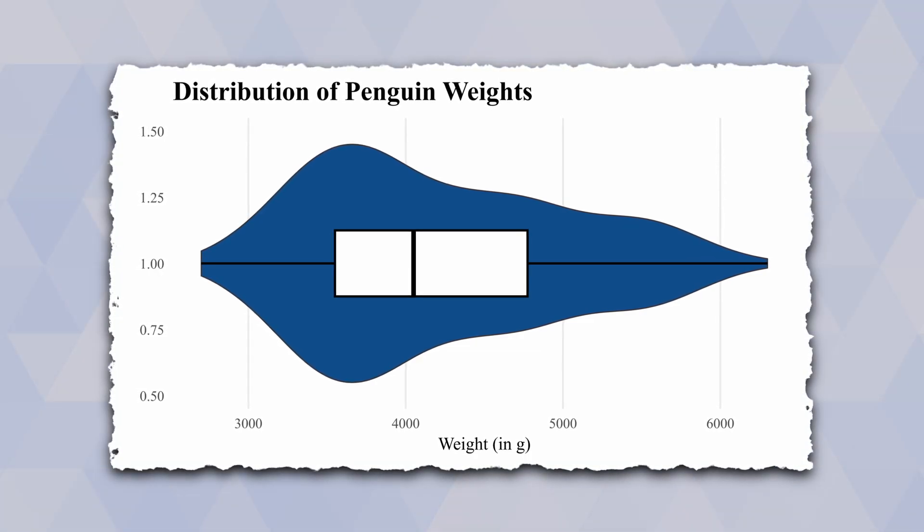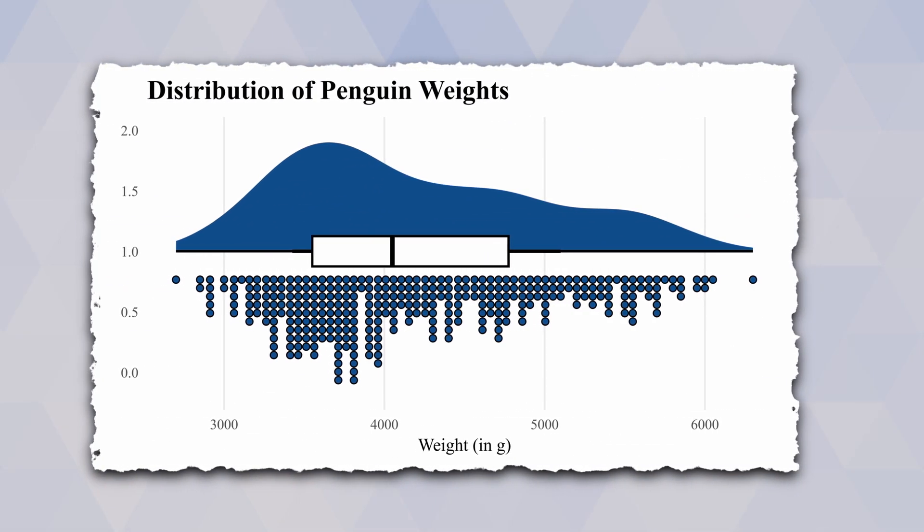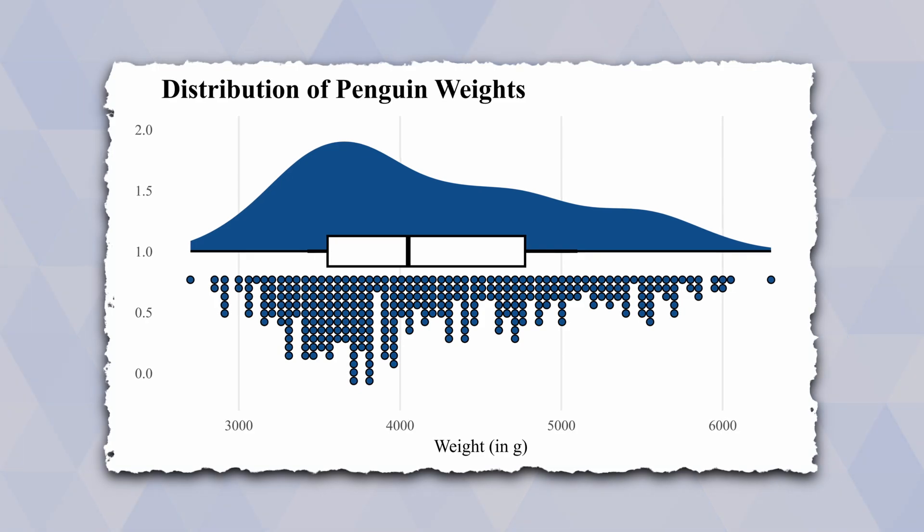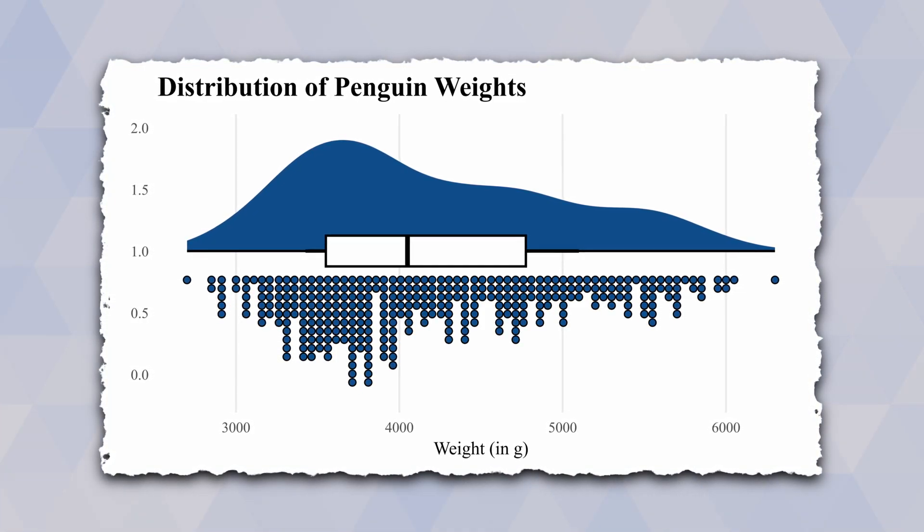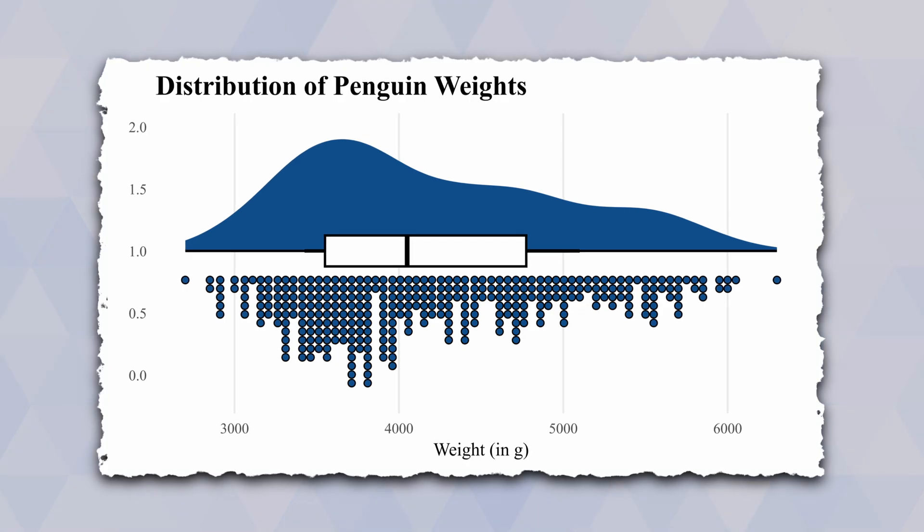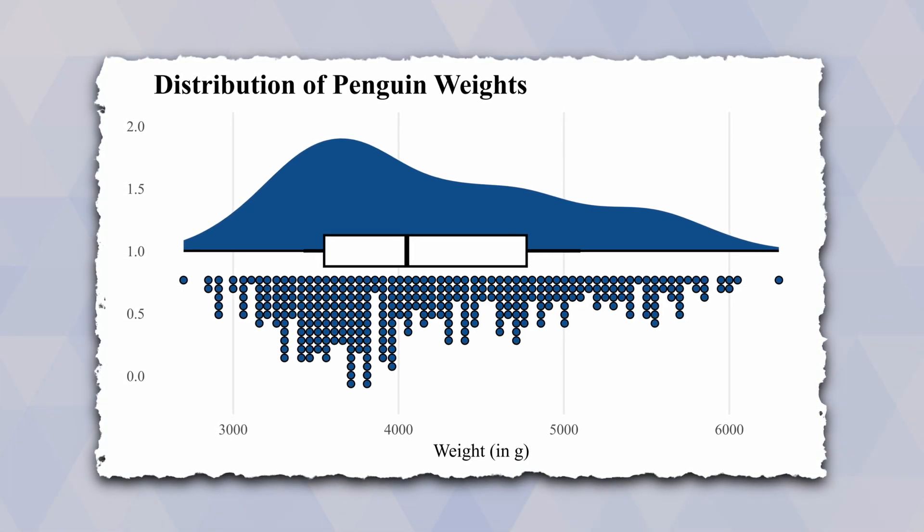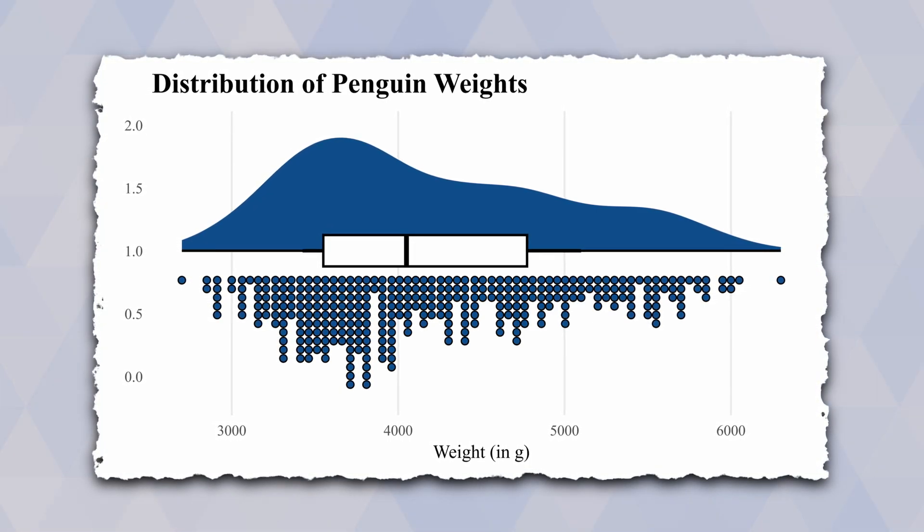Or you could even go further than that and go for the raincloud plot. These plots combine boxplots and violin plots with another histogram that shows the data more explicitly. And the way these three things—boxplots, violin plots, and histogram—are arranged, it kind of looks like a raincloud, hence the name.